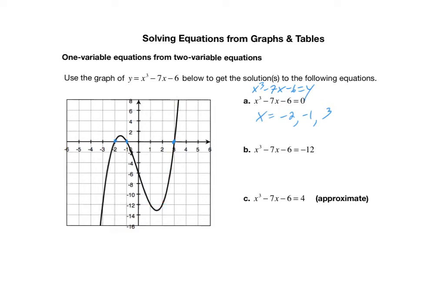So there can be more than one solution to non-linear equations, as you can see here. Let's put those particular points in red. Each one of these three red points has a y-coordinate of negative 12. To get the solutions, all you need to do is find the x-coordinates of these points. The x-coordinate of the first point is negative 3, the second is 1, and the third is 2. So x equals negative 3, 1, and 2 — three solutions. Again, there's absolutely no computation.